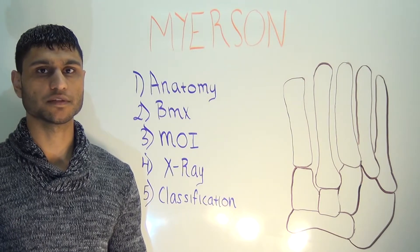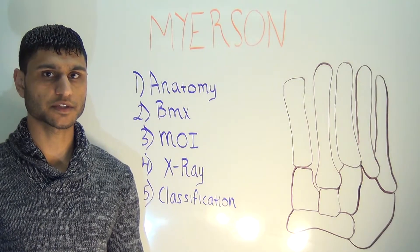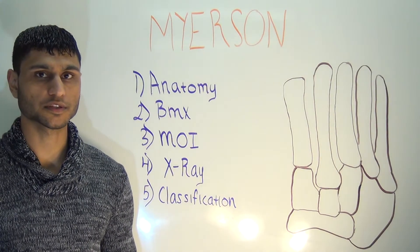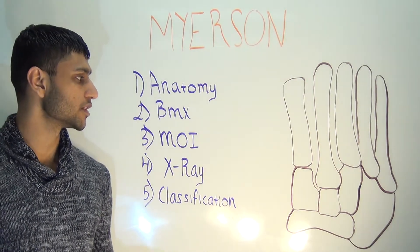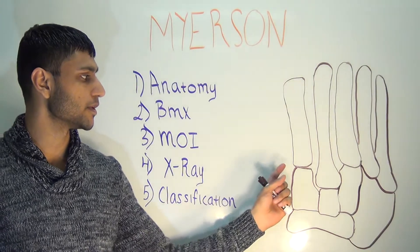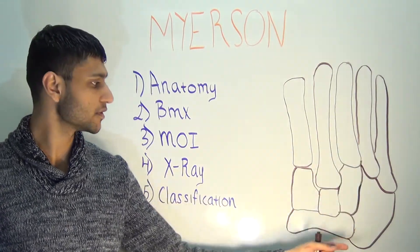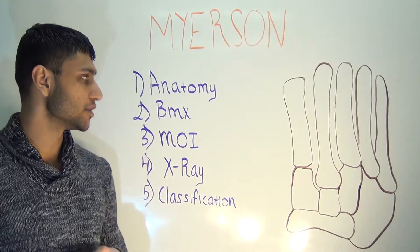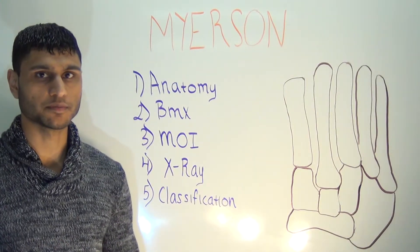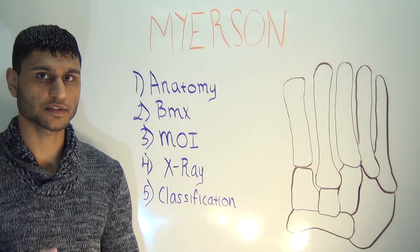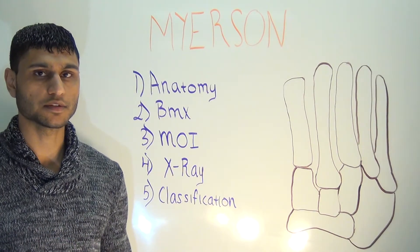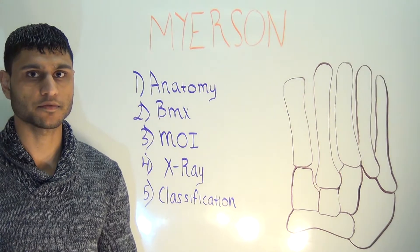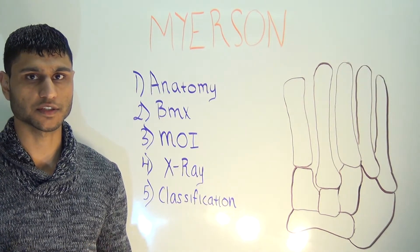The Myerson classification describes fractures and dislocations of the tarsal-metatarsal, or Lisfranc joint, which is the articulation between the bases of the five metatarsals and their respective cuneiforms and the cuboid. In this video, we're going to review the important anatomy and biomechanics of the Lisfranc joint, the mechanisms of injury, important radiographic findings, and finally, the classification itself.